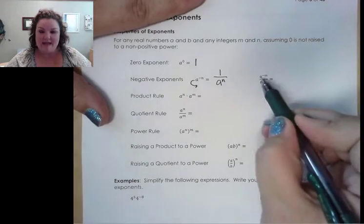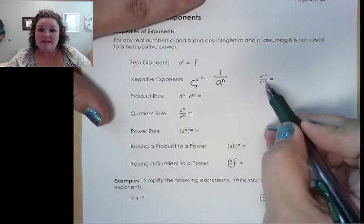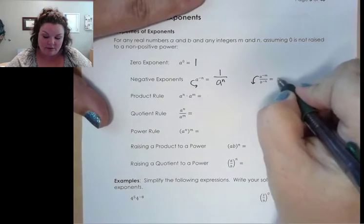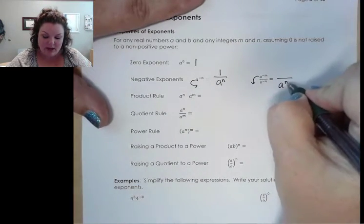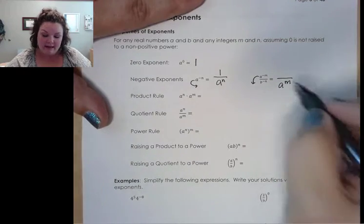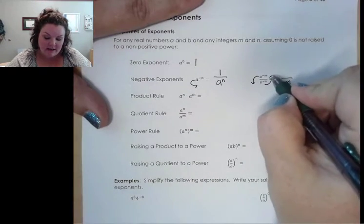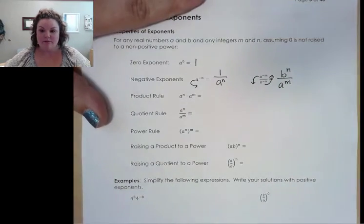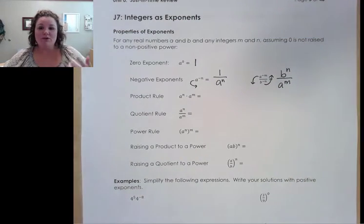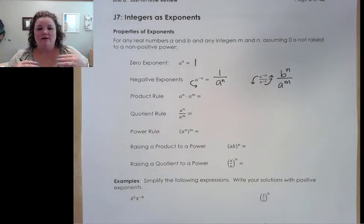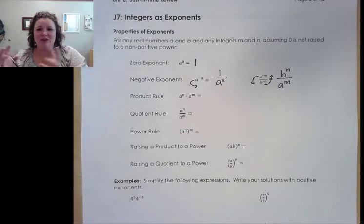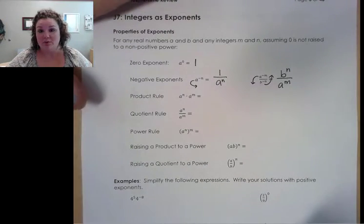So in this case, if I had a to the negative m over b to the negative n, I could bring the top base down, which would make it a to the positive m on the bottom, and I could take my b to the negative n up, which would make it b to the positive n. We'll use this rule a lot to move things across where we need them to be so that we can collect all of our b's or a's in one place.